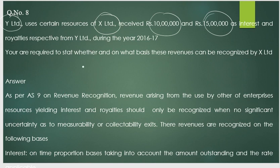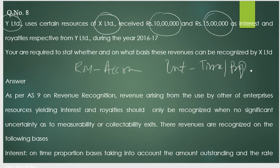The answer for question eight is the same as question one: royalty is recognized on accrual basis and interest is recognized on time or proportionate basis. That completes the AS-9 questions. There are only about six or seven questions — please go through all of them to get the answers.